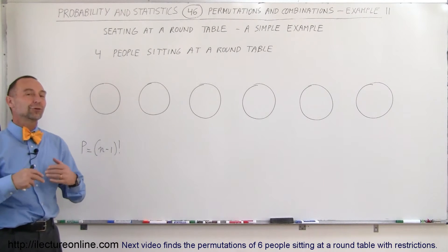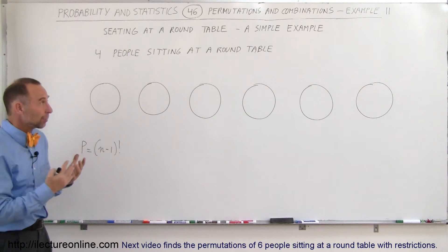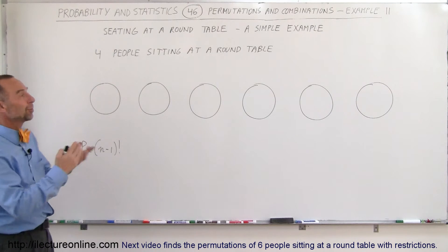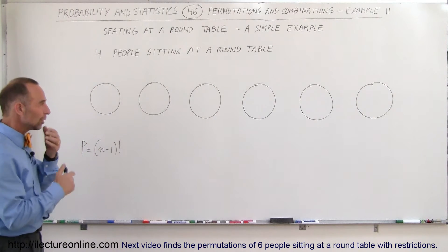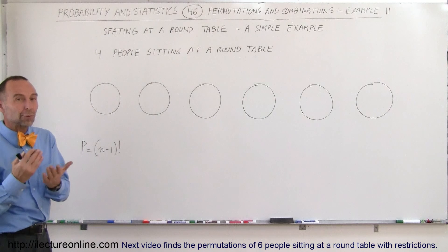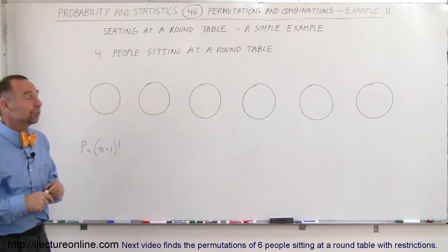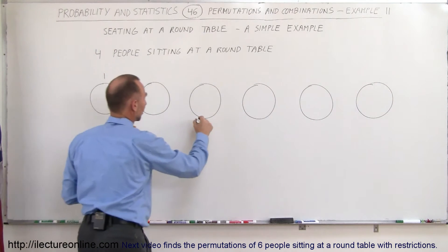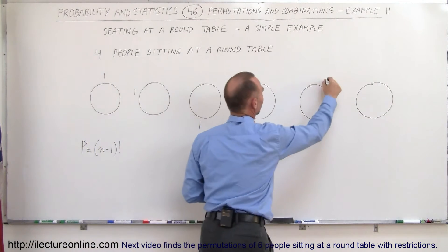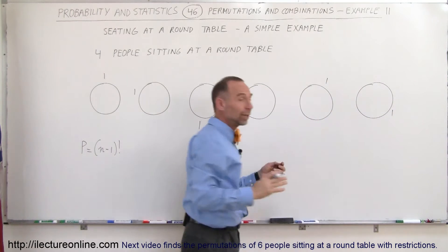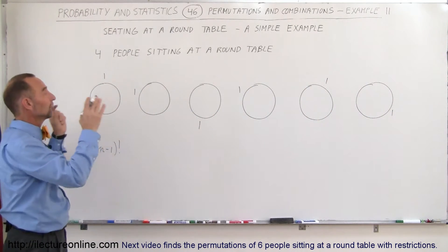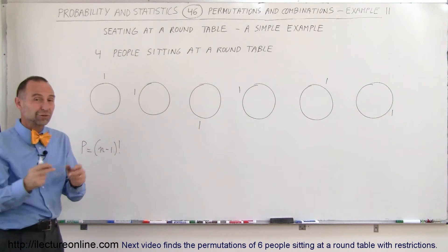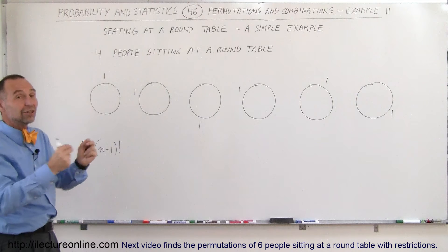Welcome to ElectronLine. To further illustrate how you work out the number of permutations when there are N number of people sitting around a table, we're going to do another example. The first person can sit anywhere — if they sit here, or there, it really makes no difference. You place the first person somewhere around the round table and it doesn't matter where, because from the geometry of a circle, it really doesn't make any difference.